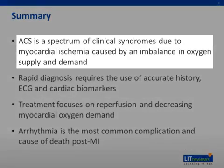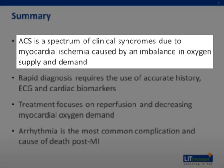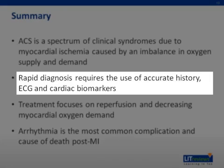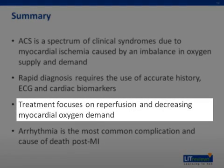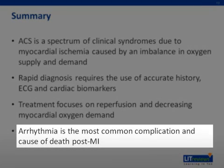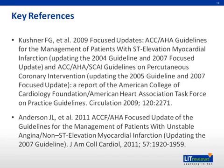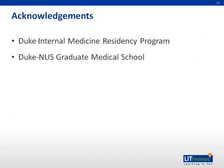In summary, ACS, or acute coronary syndrome, is a spectrum of clinical syndromes due to myocardial ischemia caused by an imbalance in oxygen supply and demand. Rapid diagnosis requires accurate history, ECG, and cardiac biomarkers. Treatment focuses on reperfusion and decreasing myocardial oxygen demand. Arrhythmia is the most common complication and cause of death post-MI. For more information, please see the ACC/AHA guidelines. That concludes this voice-annotated presentation on acute coronary syndrome. Thank you for viewing.